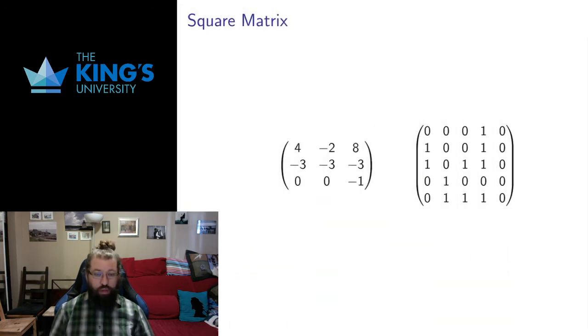I want to go through some special definitions. A square matrix is a matrix that has the same number of rows and columns. So this is a three by three matrix, or a three times three matrix—has three rows, has three columns. This is a five by five matrix—has five rows, five columns. Any matrix with the same number of rows and columns is a square matrix because it makes a square.